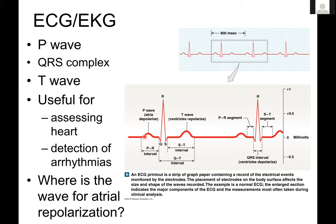The EKG starts with a P wave, which is the atria depolarizing. Again, this is only measuring electrical activity of the heart. The QRS complex represents the ventricles depolarizing — note I said depolarizing, not repolarizing. The T wave is the ventricles repolarizing. So we've got atrial depolarization, then ventricular depolarization, then ventricular repolarization.